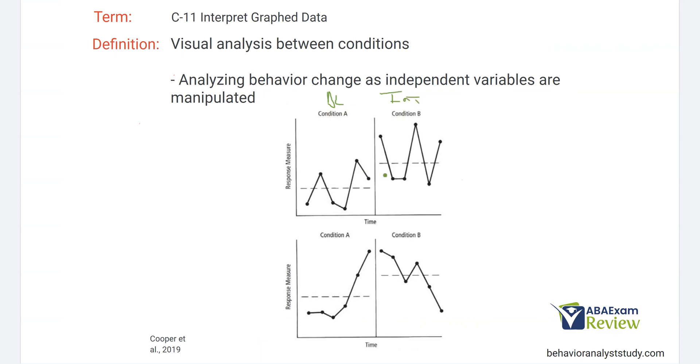And we see our level has changed pretty substantially. Well, we can say our independent variable, right, might have had some effect, okay? Both condition A and B are very variable, and there's not much trend, but the level did change.